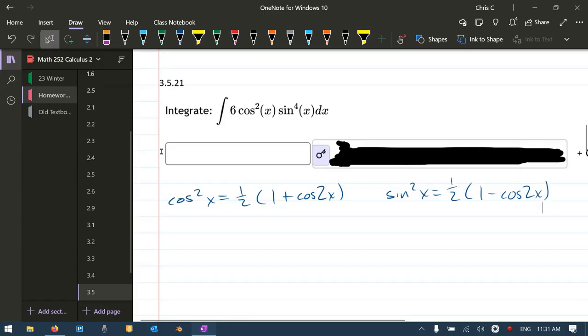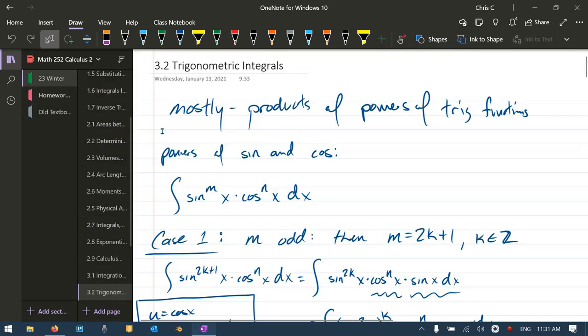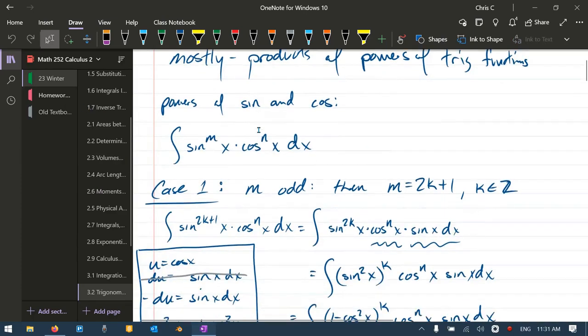This is a trig integral where we have cosine and sine raised to powers. Way back in a few sections ago, we did trig integrals, but this is when you had sine to a power times cos to a power dx. The easy cases are where one of the exponents or both are odd.